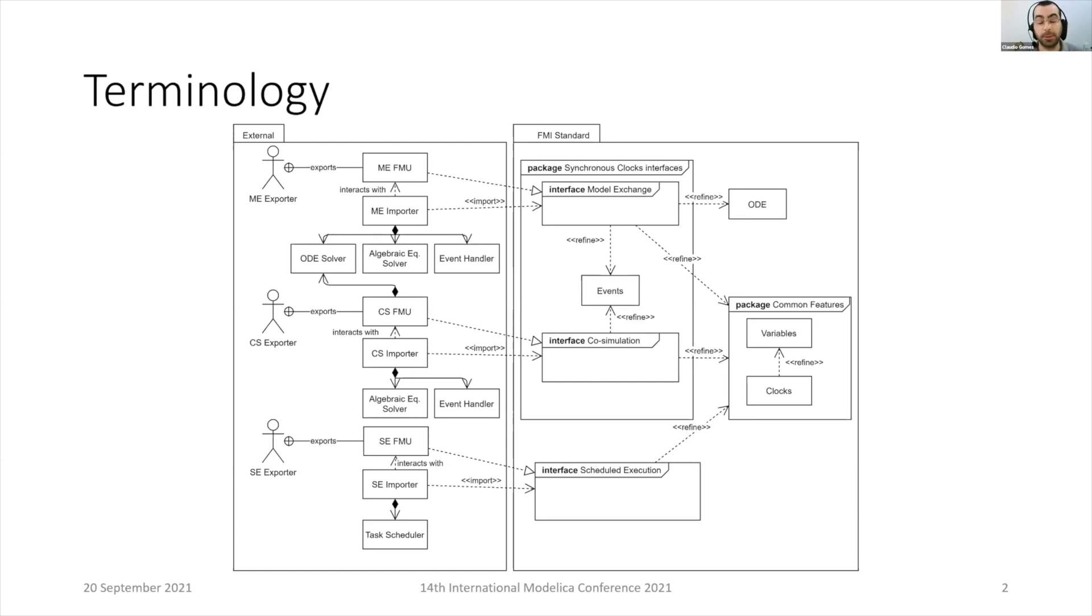In the FMI standard version 3.0, we have three different interfaces: model exchange, co-simulation, and scheduled execution.